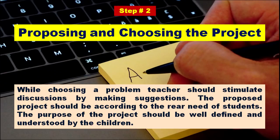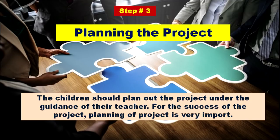Step number two: proposing and choosing the project. While choosing the problem, teachers should stimulate discussion by making suggestions. The proposed project should be according to the real need of the students, and the purpose of the project should be well defined and understood by the children. Step number three: planning the project. The children should plan out the project under the guidance of the teacher. The teacher should act as a guide as well as a facilitator, as planning is very important for the success of the project.